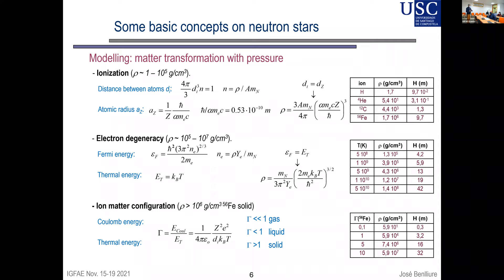Starting from low density and going to higher densities: at low density, changes are related to Coulomb interaction and atomic physics; deeper, baryonic matter wins. The first change when you increase pressure is probably ionization. At the surface of a neutron star, we think there is almost normal matter — a gas of hydrogen and helium behaving like an ideal gas. As pressure increases, atoms will ionize and you produce a plasma of electrons and ions.